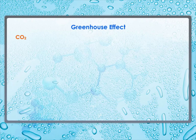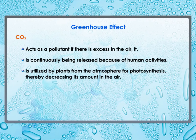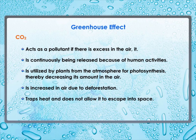CO2 is one of the components of air, but if there is excess CO2 in the air, it acts as a pollutant. CO2 is continuously being released because of human activities, while at the same time the area under forests is decreasing. Plants utilize CO2 from the atmosphere for photosynthesis, reducing its amount in the air. Deforestation leads to an increase in the amount of CO2 because the number of trees which consume CO2 is reduced. CO2 traps heat and does not allow it to escape into space. As a result, the average temperature of the earth's atmosphere is gradually increasing — this is called global warming.